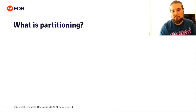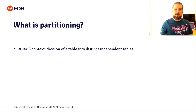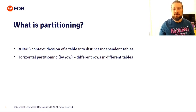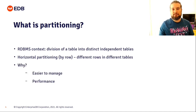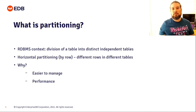Let's look at what partitioning is. In a relational database context, partitioning is the division of a table into distinct independent parts — splitting up the data in your table into multiple tables that you can manage independently. This is called horizontal partitioning, which means we partition the table by row, so different kinds of rows make it into separate tables. We partition our tables because it makes them easier to manage, easier to move around your data, and it also improves performance under certain conditions.